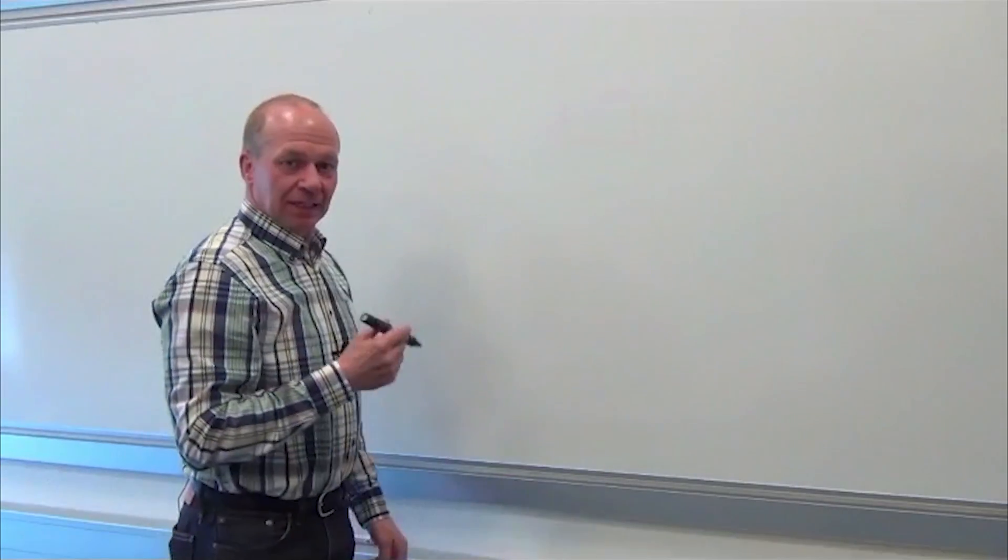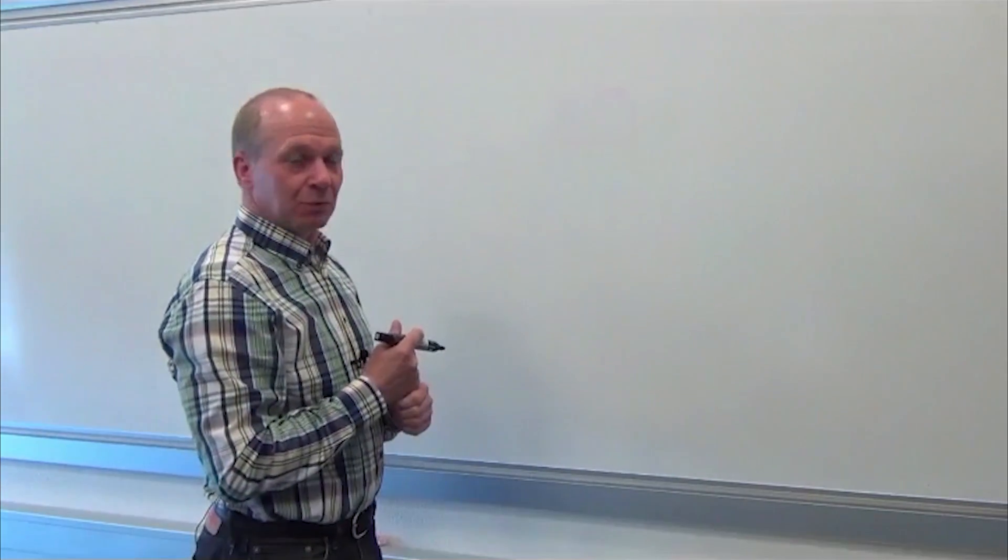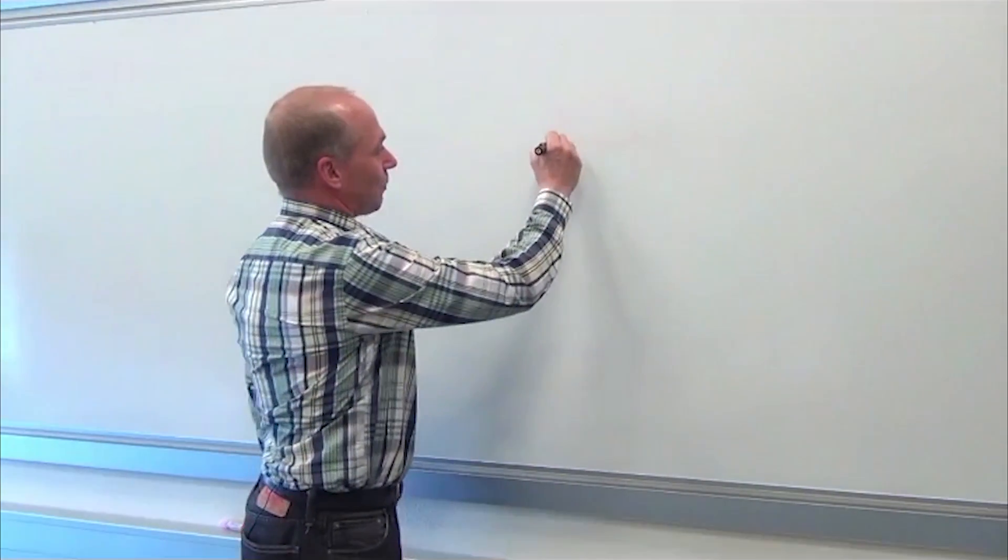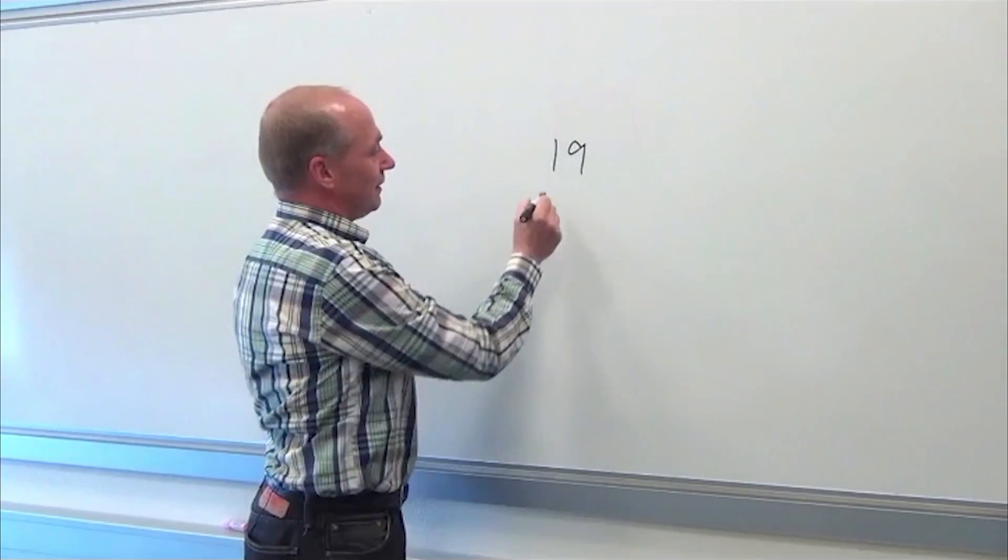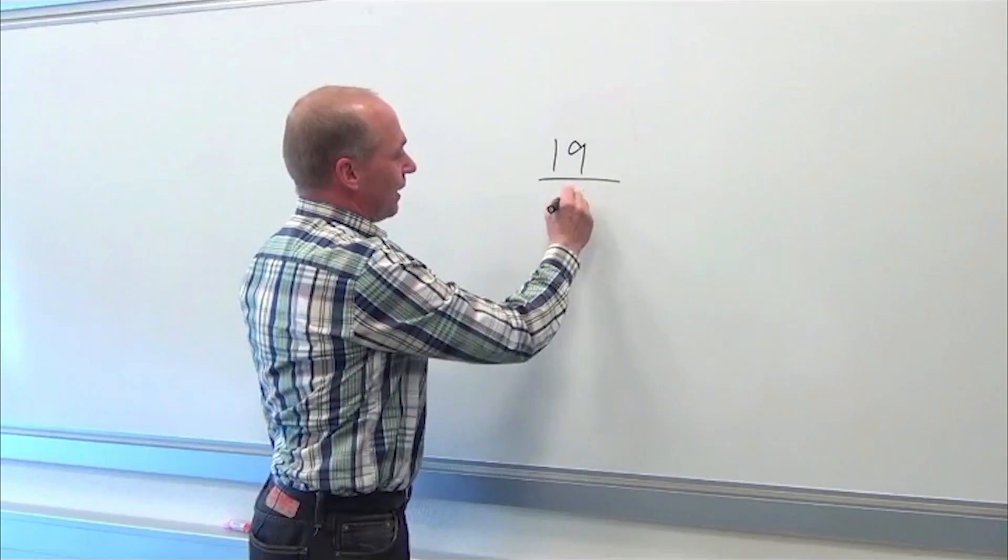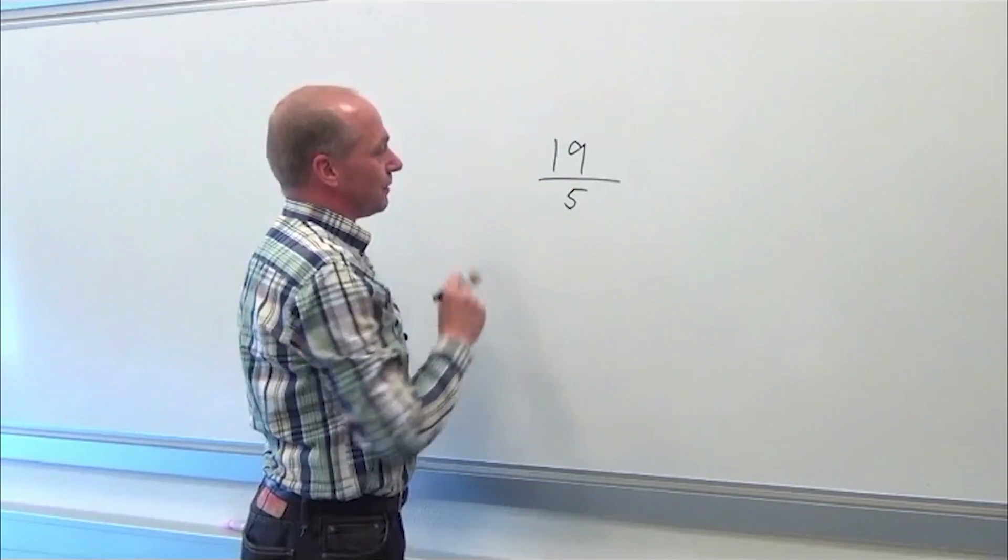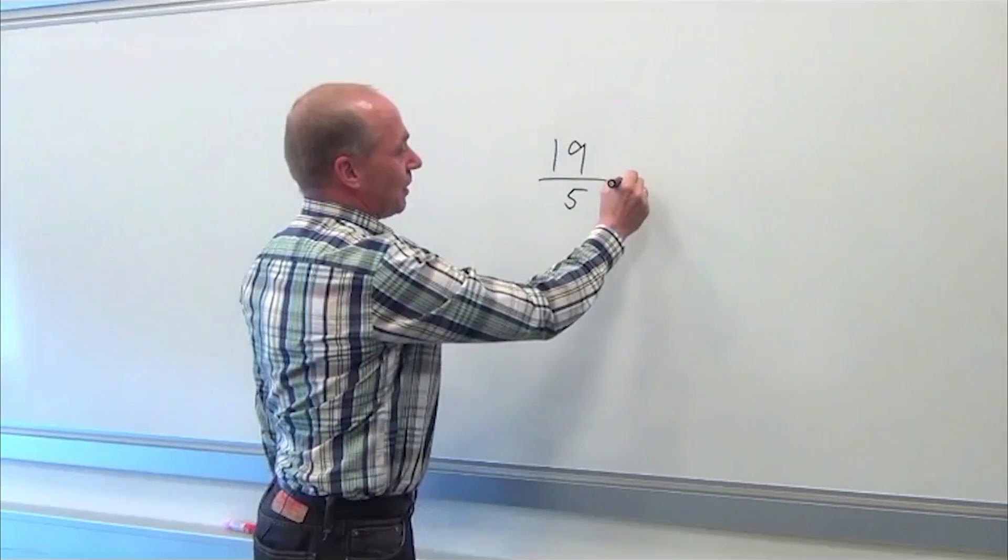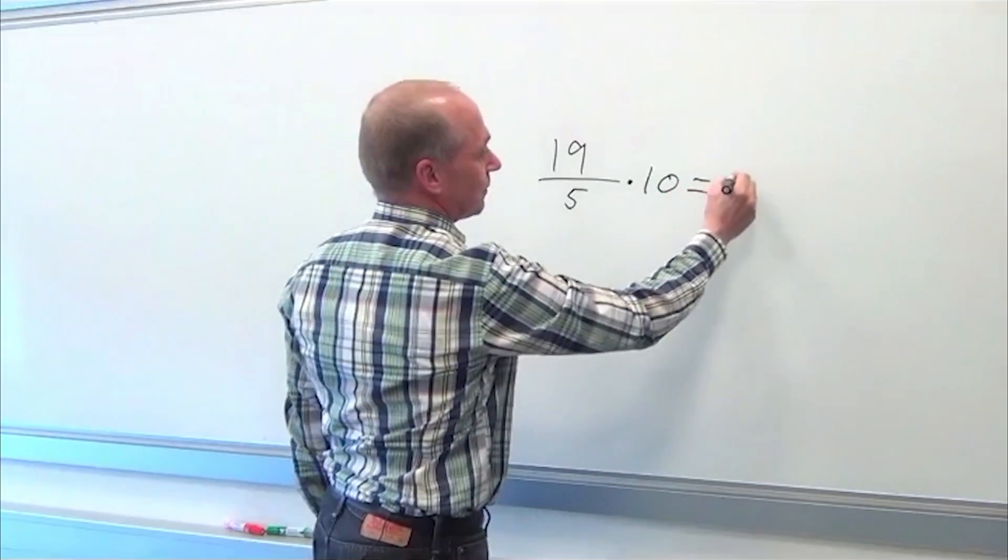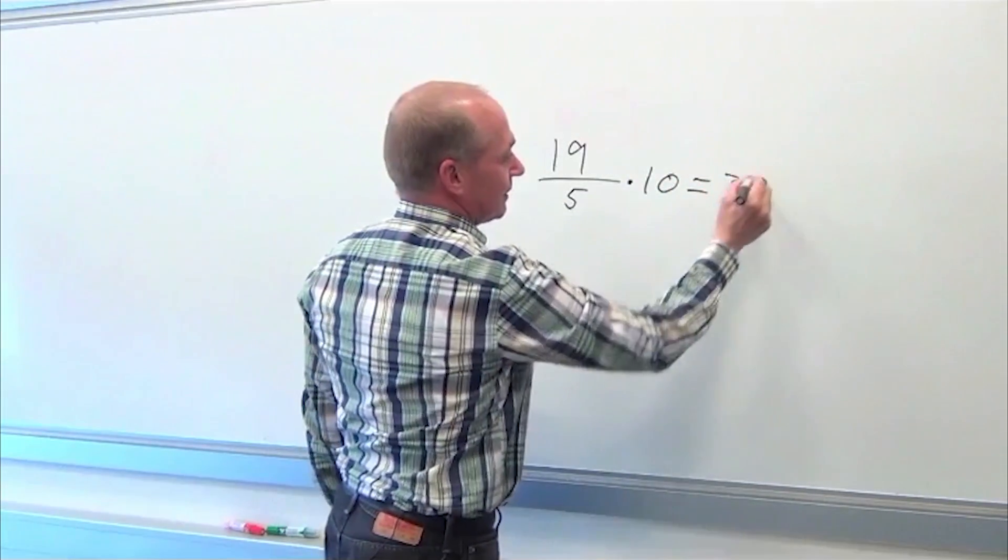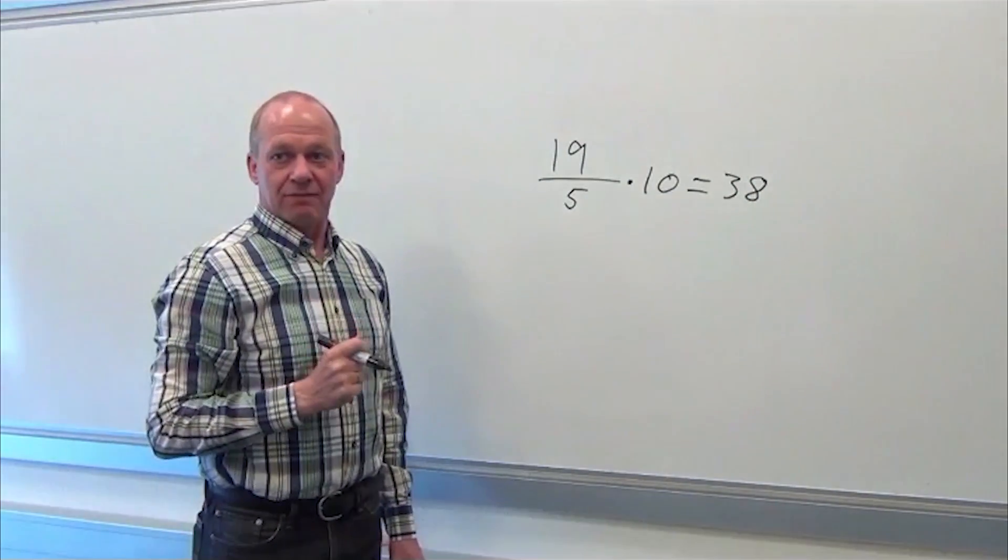The scaling is done related to one motor revolution. So I need to calculate how many millimeters the sled will move per motor revolution. So I start out with my 19 teeth on the wheel. I need to divide by 5 because we have the gear 1 to 5. So 1 motor revolution is 1 fifth of a revolution of the wheel. And then I multiply by 10 because I have 10 millimeters per tooth. And this is equal to 38. So I have 38 millimeters per motor revolution. And that is what I need to enter in the drive for scaling.